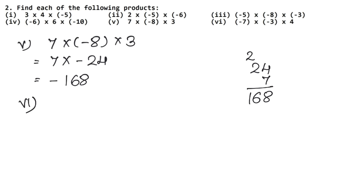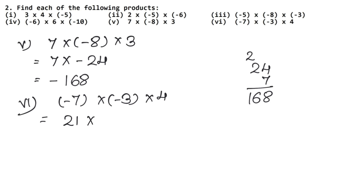The next part says: minus 7 multiplied by minus 3, and then multiplied by 4. Minus into minus is plus, and 7 × 3 = 21. Plus does not need to be written. So 21 into 4: plus into plus is plus, and 21 × 4 = 84. So the answer is 84.